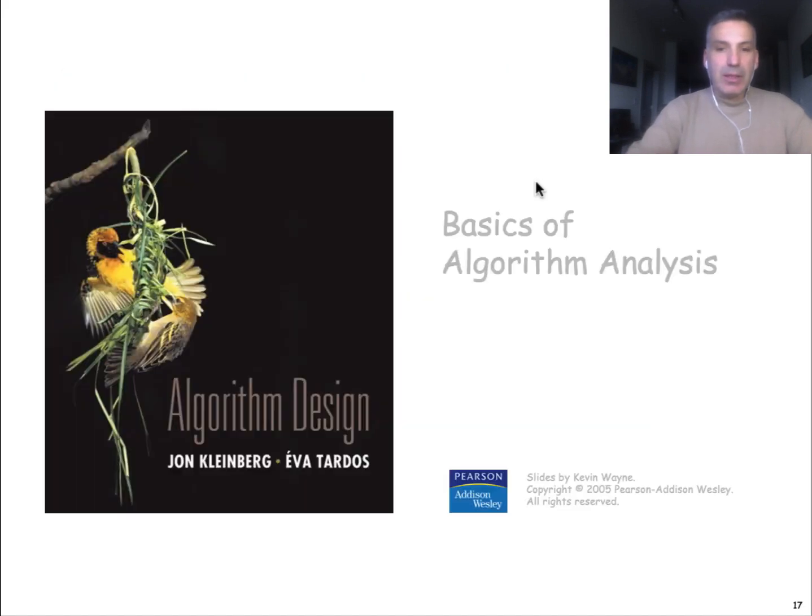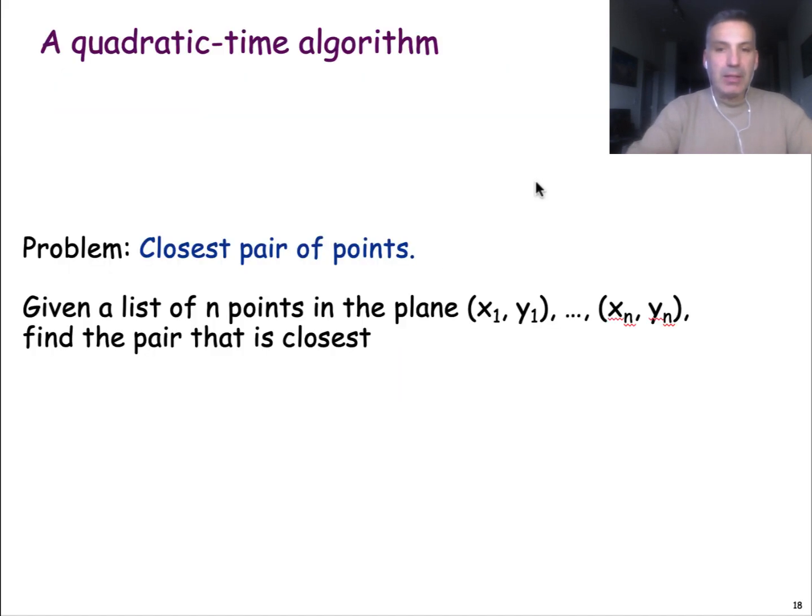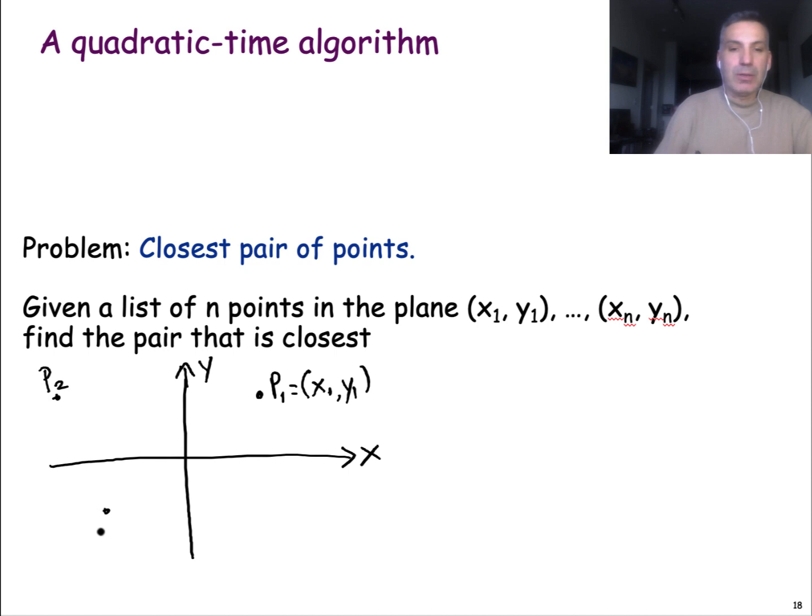Let's start with an algorithm that is quadratic time. Imagine that I give you the Euclidean space—this is x, this is y—and in this space we have n points. Here is my point 1 with coordinates x1, y1, perhaps the second point is here, the third point is here, the fourth point is here, and so on.